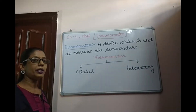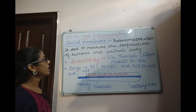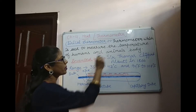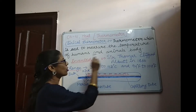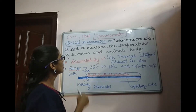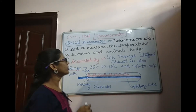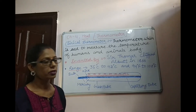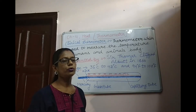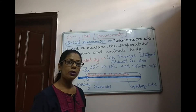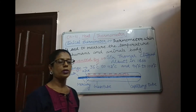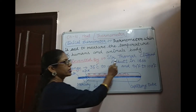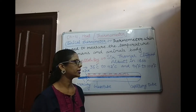Now we will discuss about Clinical Thermometer in detail. A Clinical Thermometer is a thermometer which is used to measure the temperature of animals' and humans' bodies. We cannot use a Clinical Thermometer for measuring the temperature of any other object. The Clinical Thermometer was invented by Sir Thomas Clifford Albert in 1866.